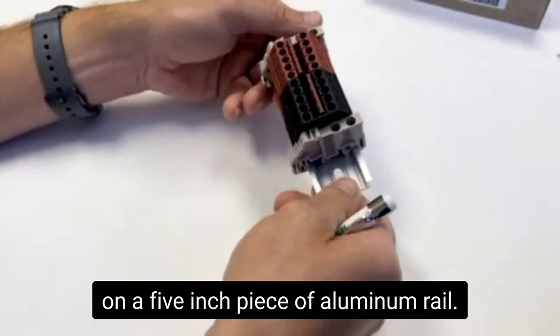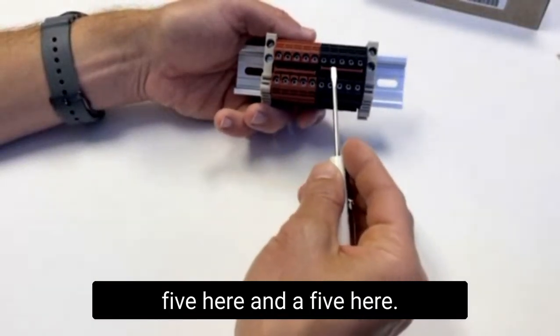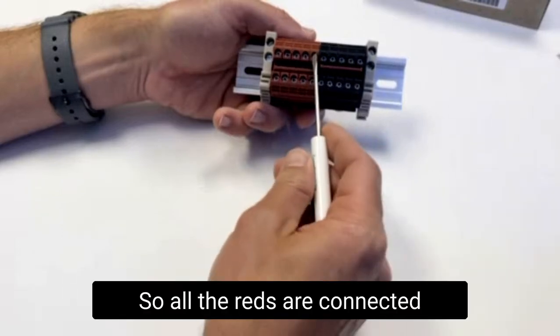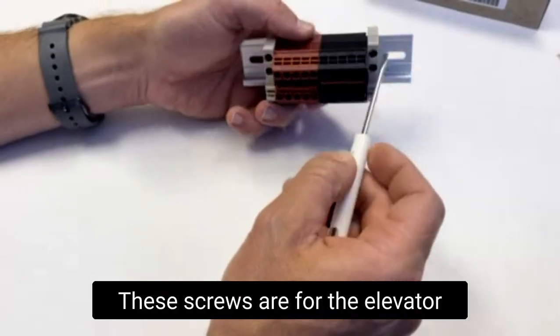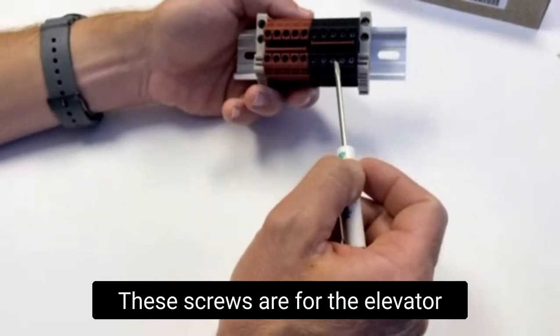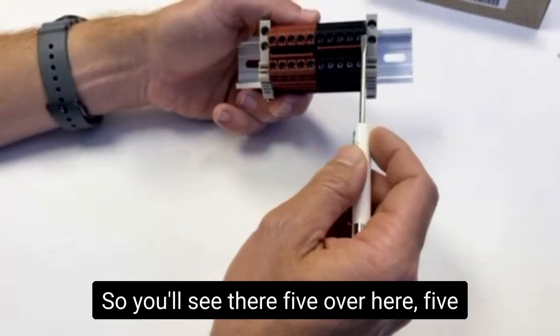five inch piece of aluminum rail. You'll see here the jumpers are five here and five here. There's no connection down the middle, so all the reds are connected and all the blacks are connected. These screws are for the elevator cage terminals on either side. You'll see five over here, five over here for a total of 10 blacks, same with the reds.